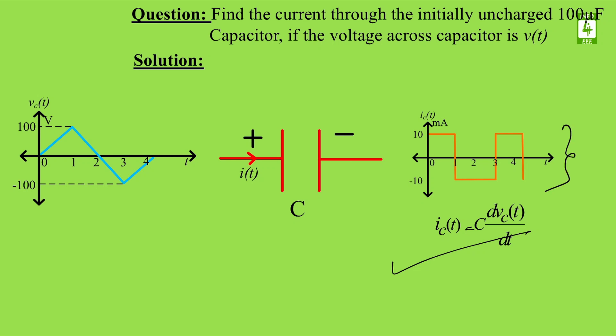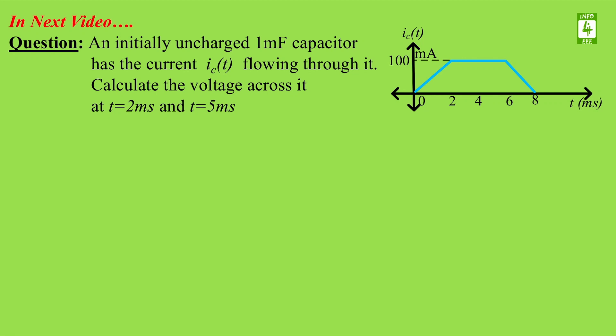If you understood this question, then you can easily solve the next question: an initially uncharged 1 µF capacitor has a given current waveform flowing through it — calculate the voltage across it at time t = 2 ms and t = 5 ms. You can write your solution in the comment section, or we will discuss this question in detail in the next lecture.